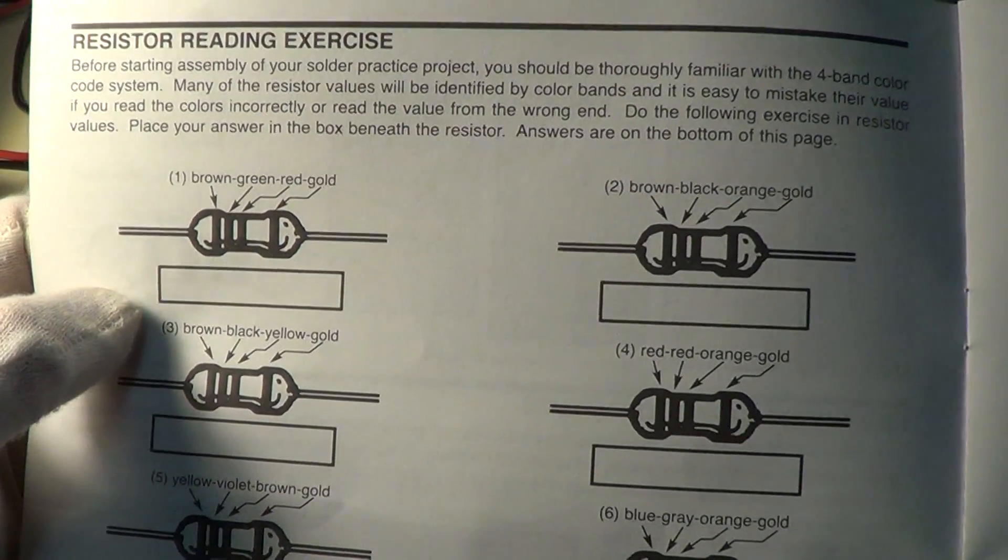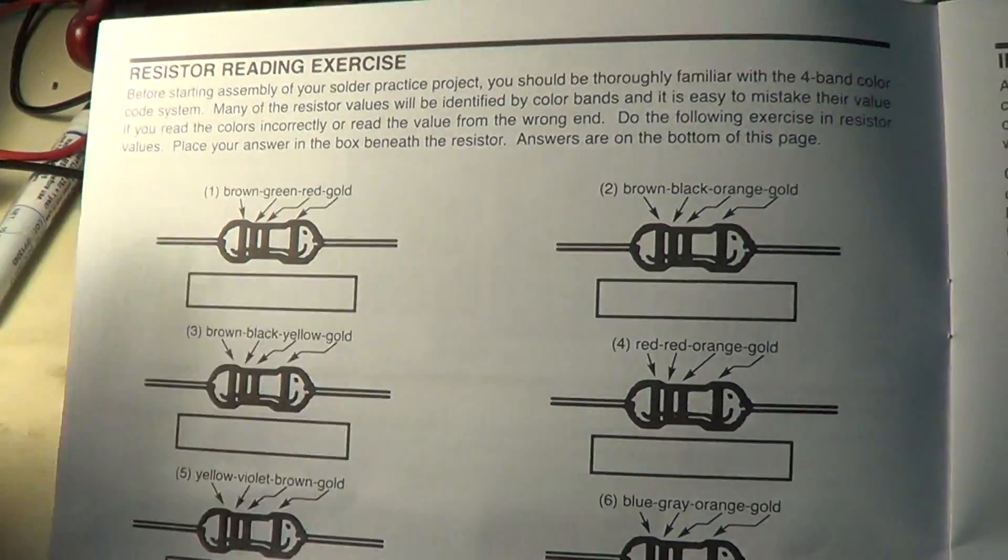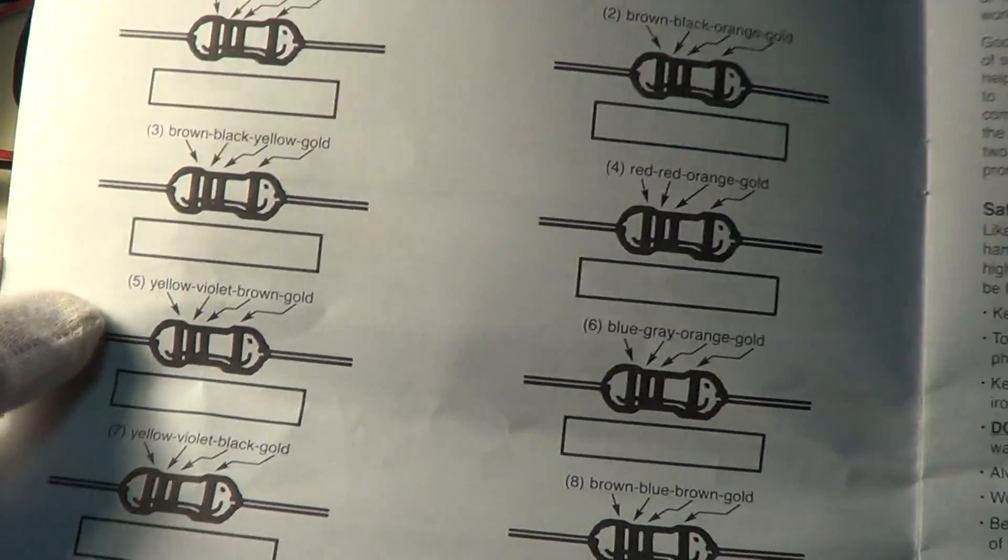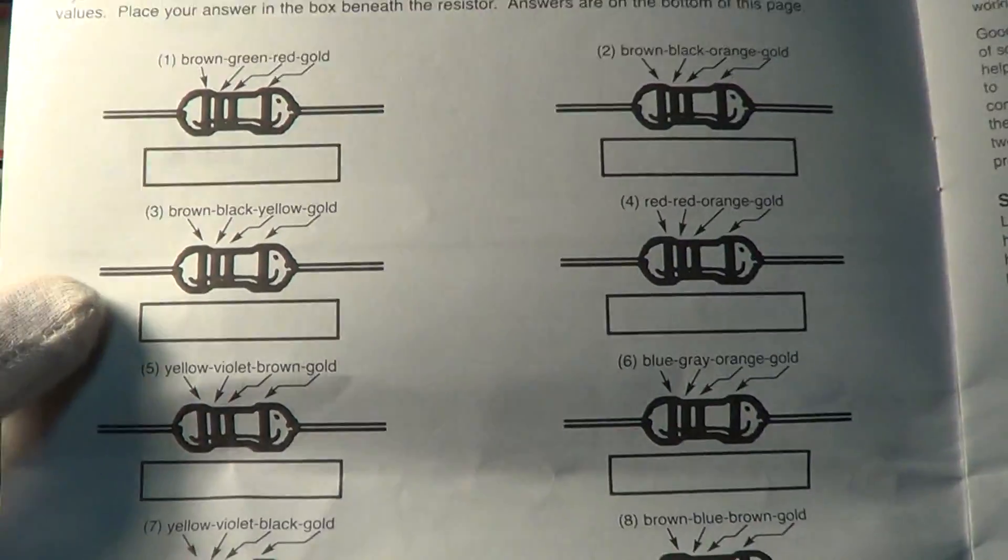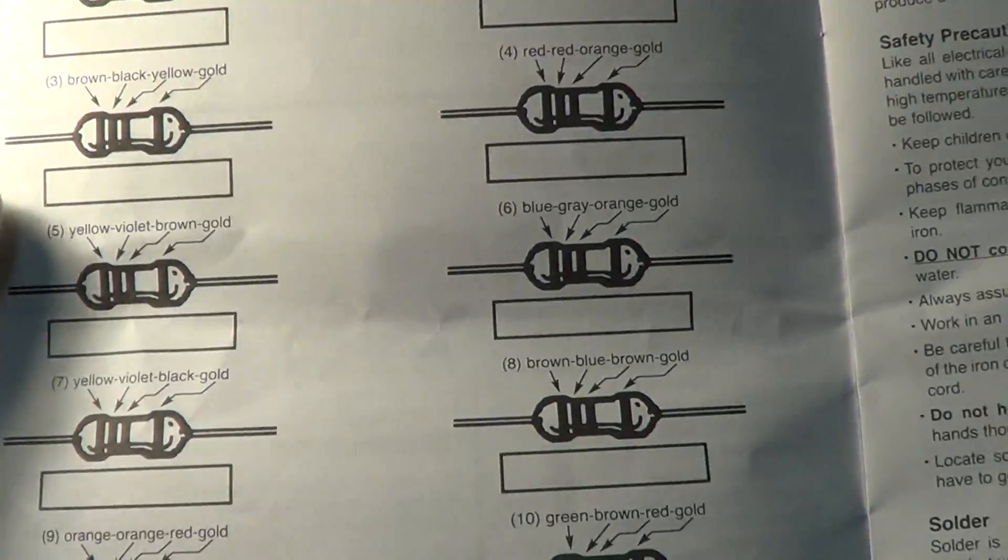But the one failing it has: it shows you how to read a resistor by color. Now this one's supposed to be brown green red gold, this is supposed to be brown black yellow gold, but they show it in black and white. It's the only thing I would have put a color picture in there—kind of hard to read color in black and white.